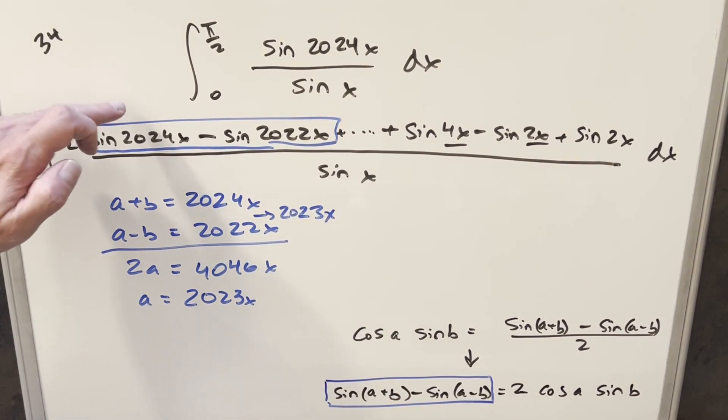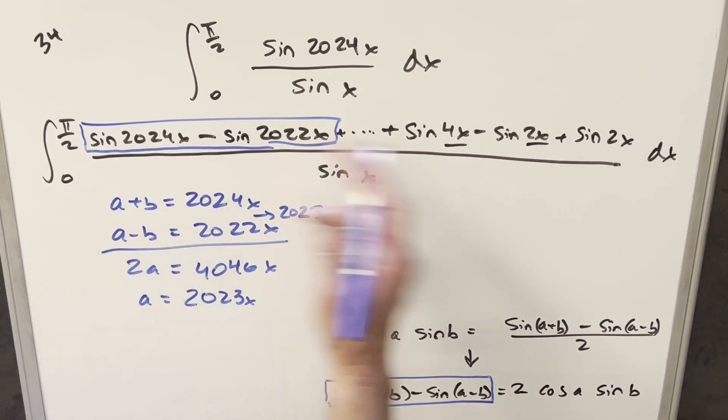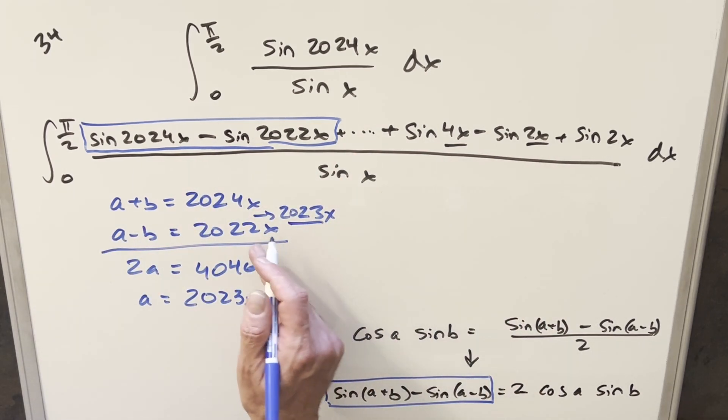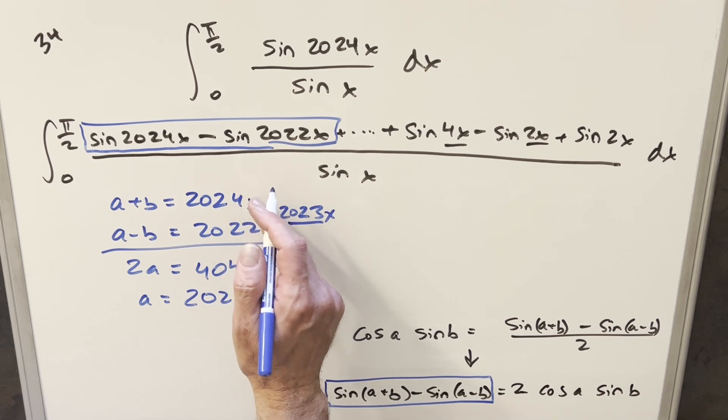But it's going to work the same way for all 1,000 of these or whatever. You're going to end up with, for the a value, you're going to end up with this value between the upper and the lower value.